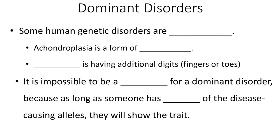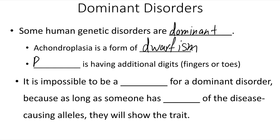Not all human genetic disorders are recessive — some are dominant. Achondroplasia is an example; it is a form of dwarfism. Polydactylism is another dominant genetic disorder, characterized by having additional digits — extra fingers or toes, more than 10. Even though both of these genetic disorders are dominant, it doesn't mean they are common. That's an important concept: just because an allele is dominant doesn't mean it's common.